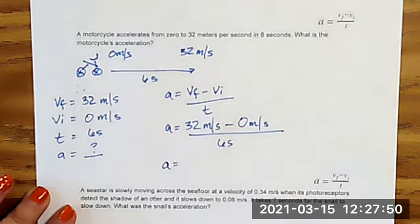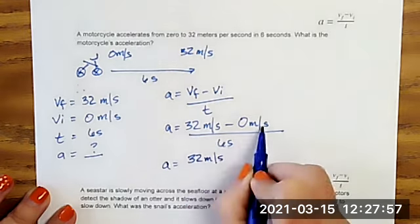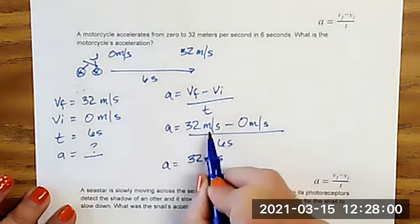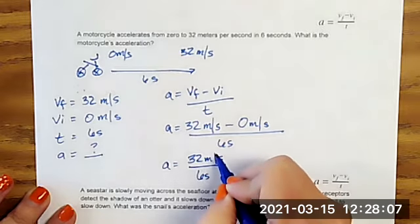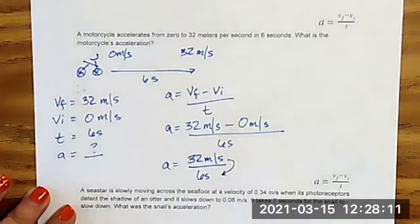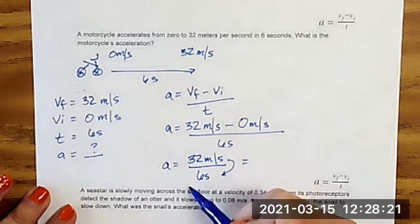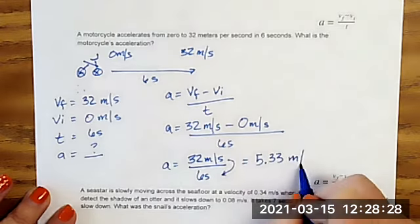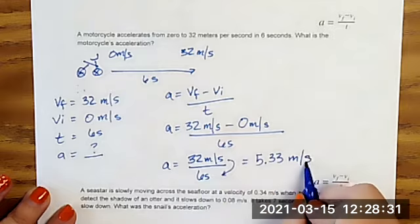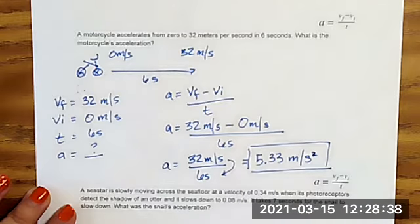So if I do my subtraction first, I have 32 meters per second minus zero is just going to give me 32 meters per second. My units stay the same because I'm not multiplying or dividing anything. I'm just subtracting. So it stays the same. And my six seconds stays on the bottom. So technically this meters per second is a fraction. So my seconds would actually end up down here, which means I'm going to do my math and I'm going to divide 32 by six. I plug that in my calculator. Remember we go from the top to the bottom 32 divided by six. We read going down 32 divided by six gives me 5.33 repeating meters per. And since it's seconds times seconds, it's going to be seconds squared, which is the proper unit for acceleration. So that is my final answer.